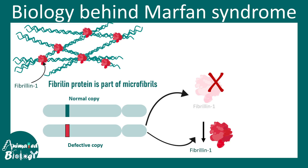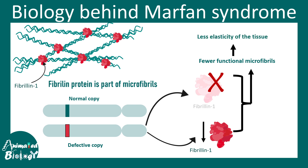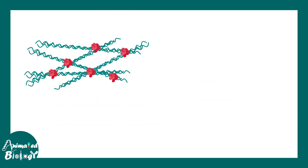This leads to reduced or almost no production of fibrillin-1, resulting in fewer functional microfibrils that reduce the elasticity of many tissues, causing several physiological problems. Additionally, fibrillin proteins help in sequestering TGF-beta molecules — they orchestrate and regulate the TGF-beta signaling pathway. In the absence of functional fibrillin-1, there is a problem with the TGF-beta signaling pathway.